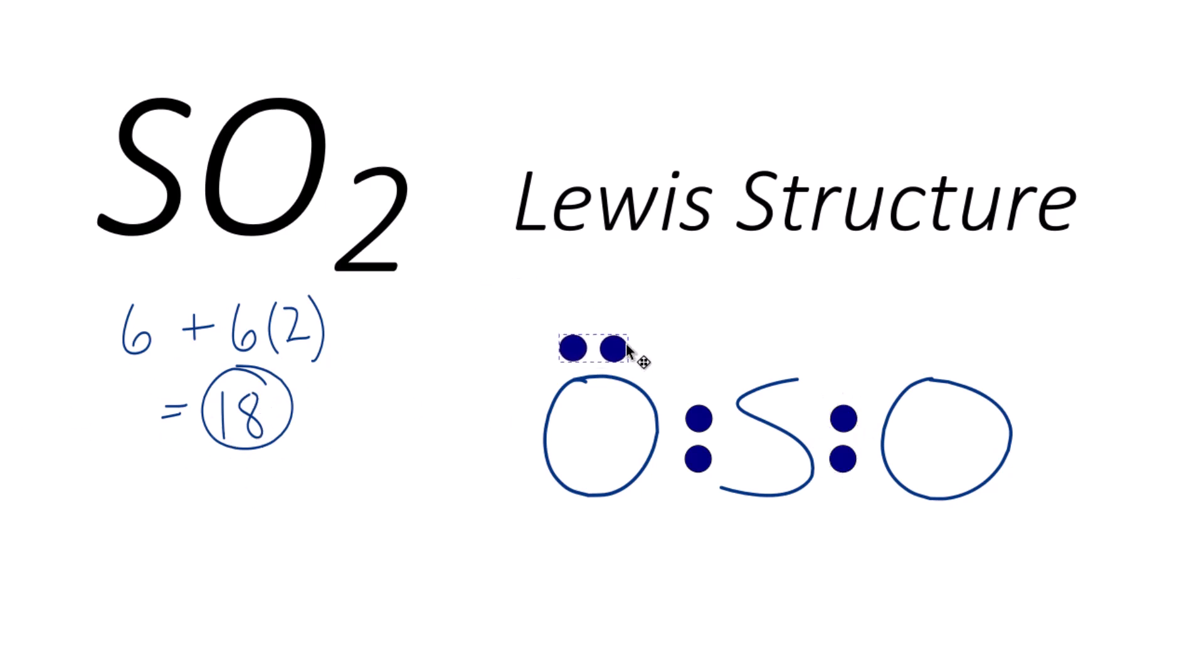Let's complete the octets on the outer atoms. So now each oxygen has eight, and that's an octet. Sulfur only has four, but remember, we've used 16, so we only have two more. Just put them here, and now we've used all 18.